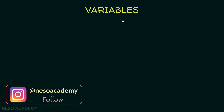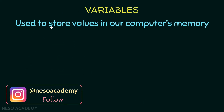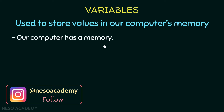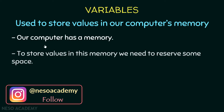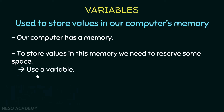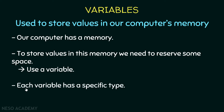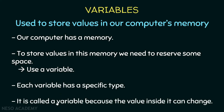What is a variable? A variable is used to store values in our computer's memory. To store values in this memory, we need to reserve some space, and this is done using a variable. Also, each variable has a specific type, and it is called a variable because the value inside it can change.